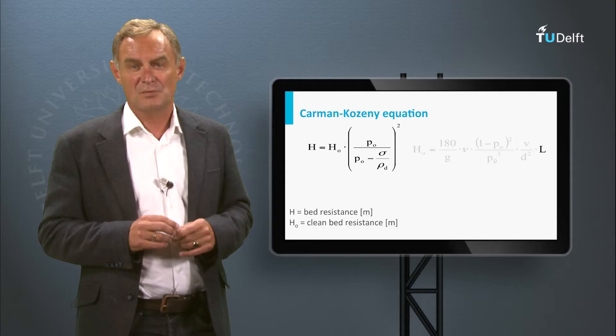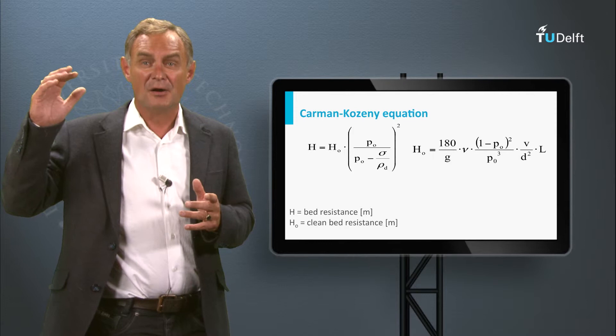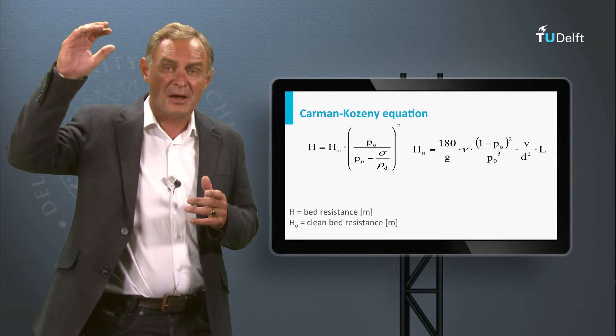The larger the filtration velocity, the smaller the porosity, the smaller the grain size, and the higher the filter bed, the larger the clean bed resistance.